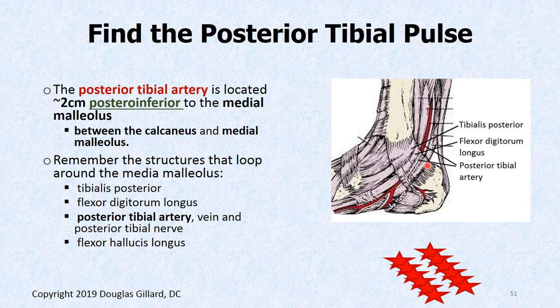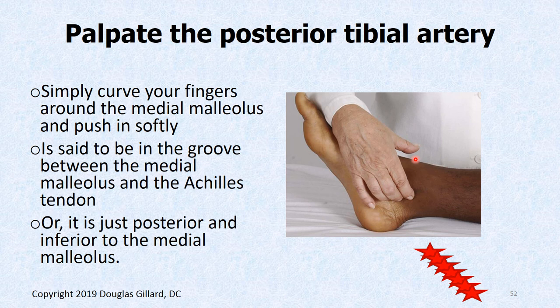The posterior tibial pulse is relatively simple. Medial malleolus to calcaneus — slip right off underneath, about two centimeters on the line going from the medial malleolus toward the calcaneus. You have a decent chance of finding this one — about 92%. Make sure you don't do it on the lateral side. The tarsal tunnel is underneath the medial malleolus, so that's where Tom, Dick, and Harry live.